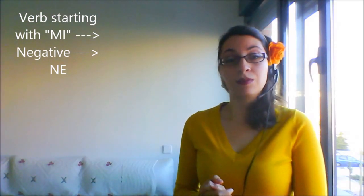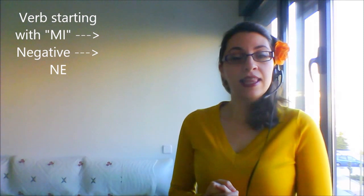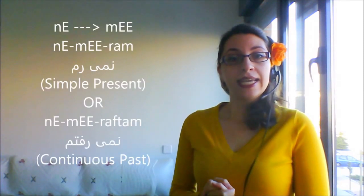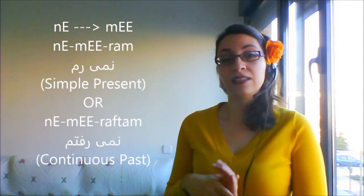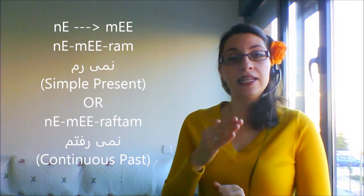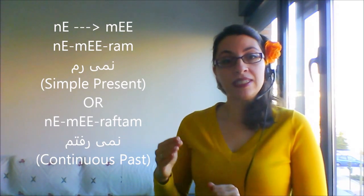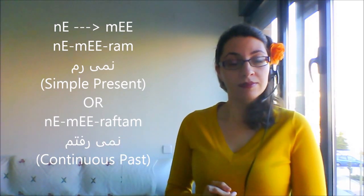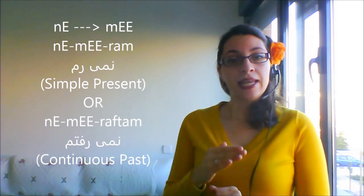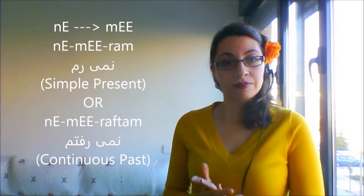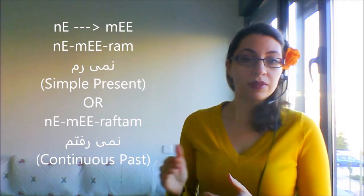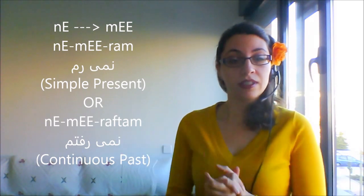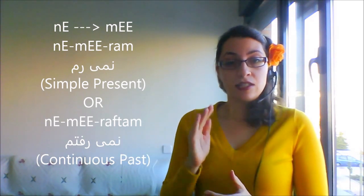Simply because phonetically the sound 'a' is closer to 'e', therefore we will have 'ne miram' or 'ne miraftam'. We wouldn't care if this verb is present or past or whatever — as long as you have a 'me' at the beginning of the verb, you're supposed to use 'ne' in order to make that verb negative.